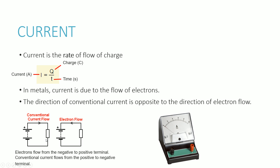For your course, all you need to know is that electrons flow and the conventional current is always going in the direction opposite to the electron flow. Current is defined as the rate of flow of charge, and you have this formula at the top that you need to learn.